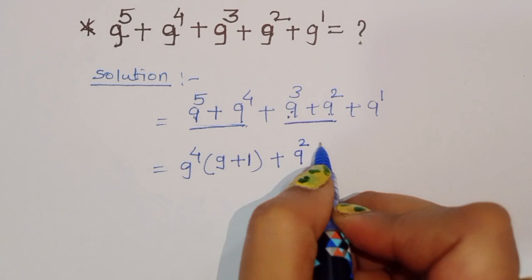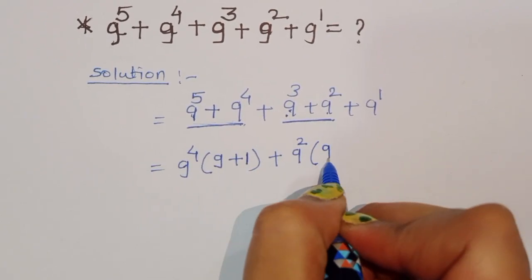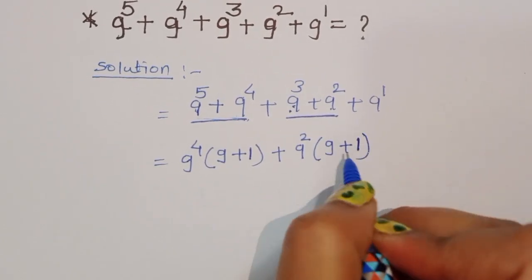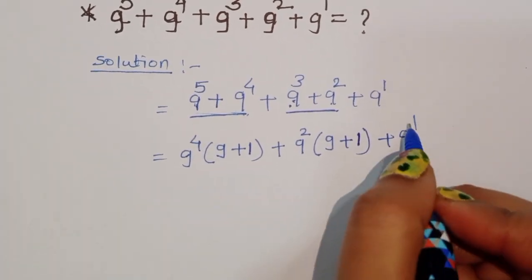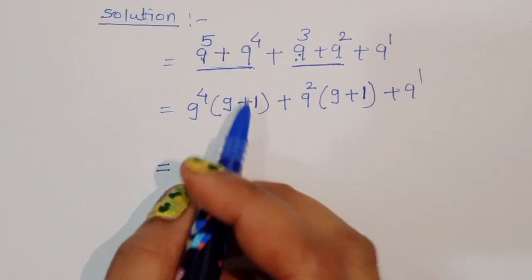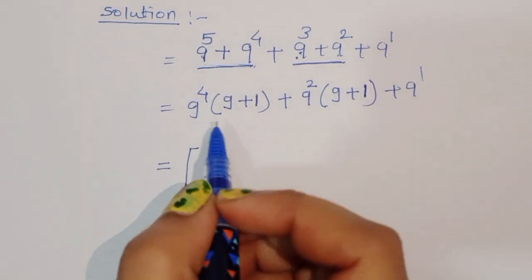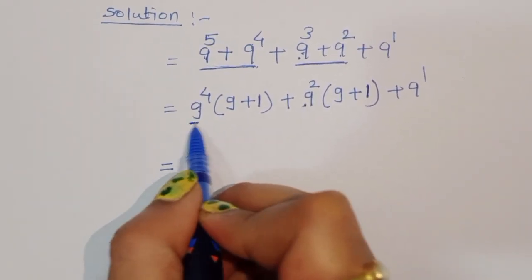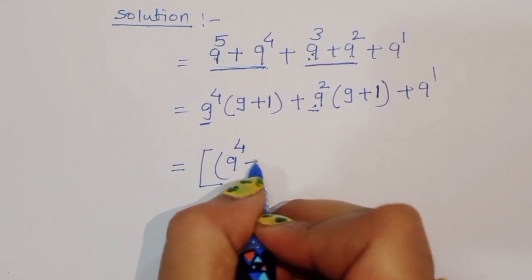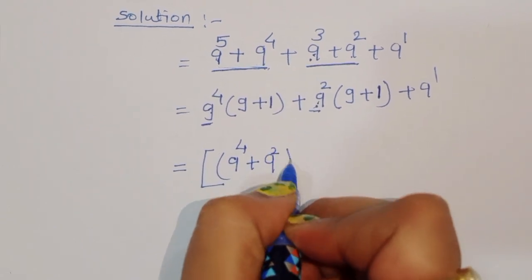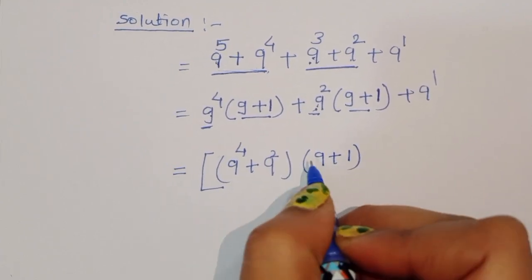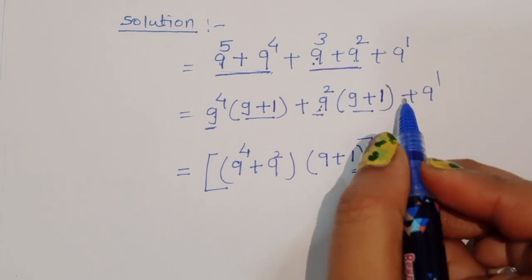When we take 9 power 2 common, we are left with 9 plus 1. Similarly for the first group, taking 9 power 4 common gives 9 plus 1. So now we have 9 power 4 plus 9 power 2 as common, and we can factor out (9 plus 1), giving us (9 power 4 plus 9 power 2)(9 + 1) plus 9.